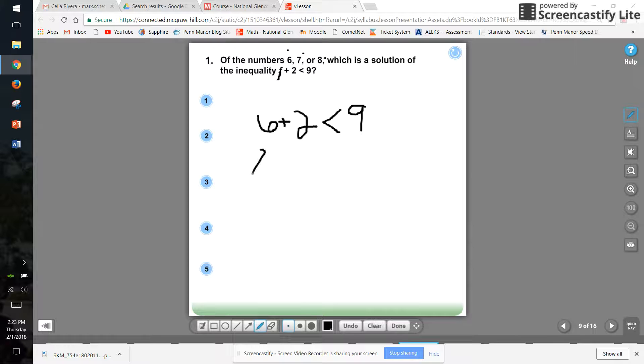How about seven plus two? Seven plus two is nine. So that doesn't make sense. Seven plus two is not less than nine. And I bet you that eight plus two is not going to work either. Eight plus two is ten, and ten is definitely not less than nine. So the correct response would be six, because six makes this inequality correct.